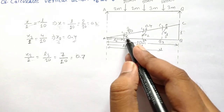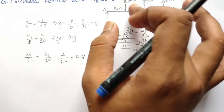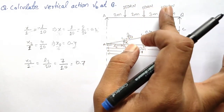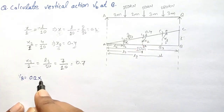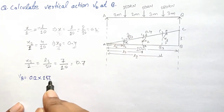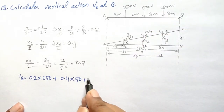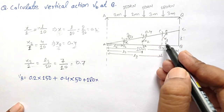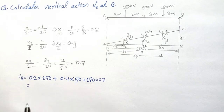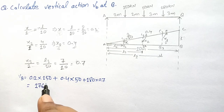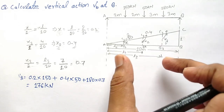After getting the ordinates, we multiply each ordinate by the corresponding load. So VB equals 0.2 times 150 kN, plus 0.4 times 50 kN, plus 0.7 times 180 kN. Solving this gives VB equals 176 kN.